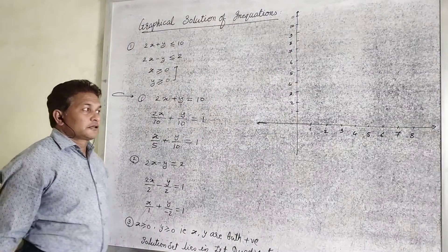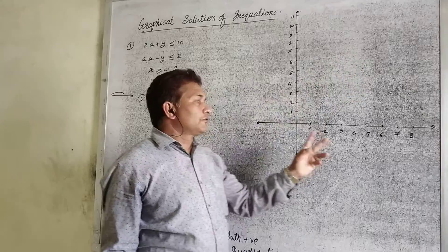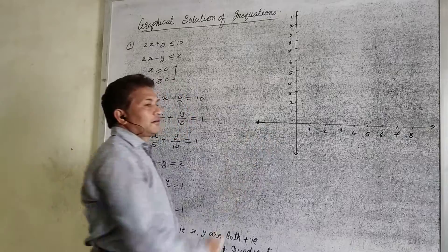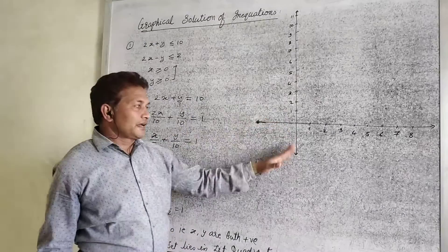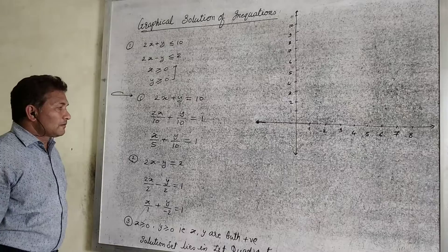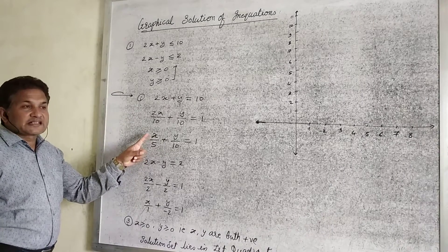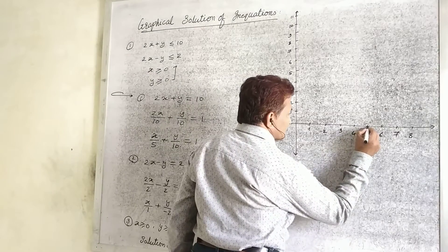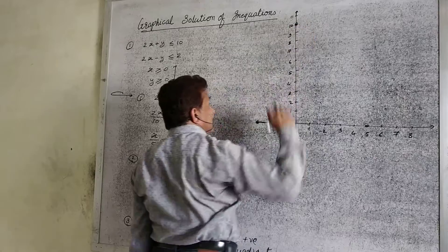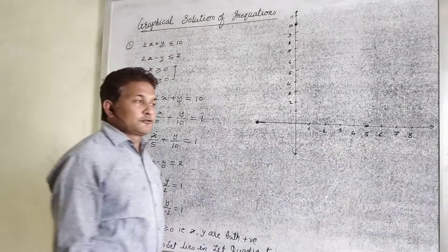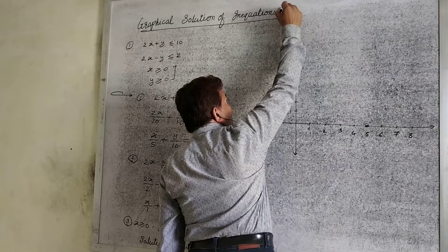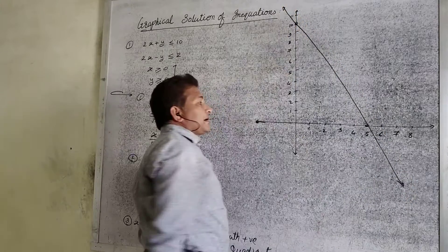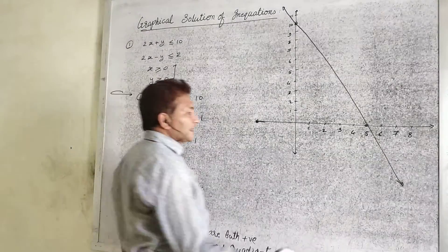As the solution set lies in the first quadrant, there is no need to write coordinates on the x-axis or y-axis beyond the origin in the negative direction. Now draw the first line. The first line intersects the x-axis at 5 and the y-axis at 10. So these are the two points for the first line. Draw the line passing through these two points.